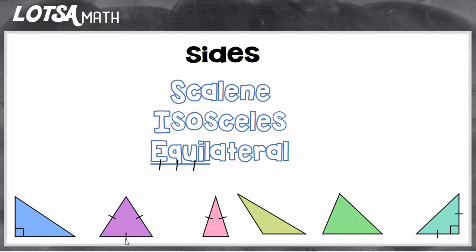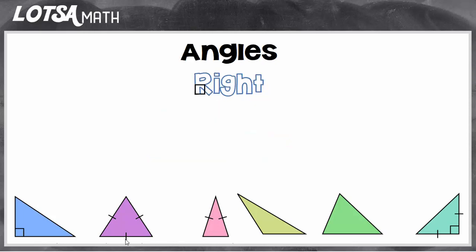You can also classify a triangle by its angles. The first type is a right triangle. If you look at a triangle and you see a right angle — sometimes indicated by a little square mark in the corner — it's automatically a right triangle. So this triangle is a right triangle, and so is this one.